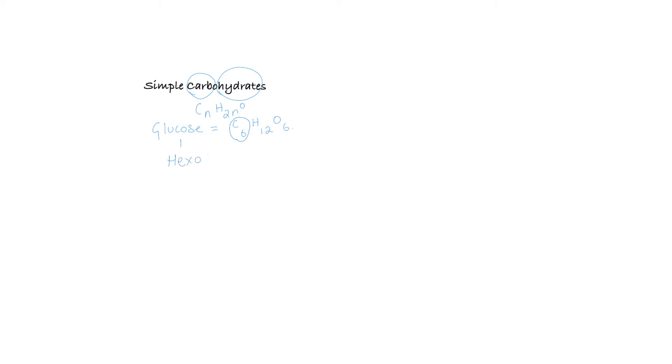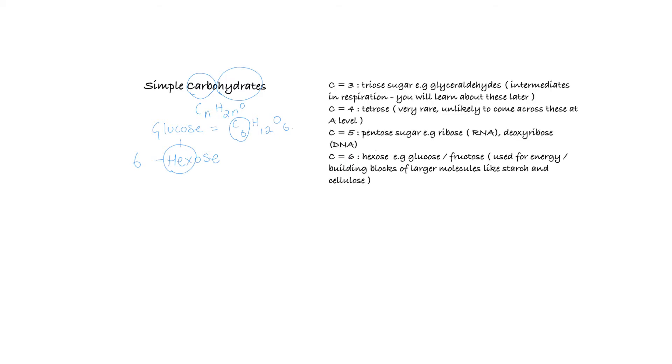We can apply that to any number of carbohydrates. If it had three carbons, it would be a triose sugar. If it had four carbons, it would be a tetrose sugar, which is very rare. If it had five carbons, it would be a pentose sugar, which you'll learn about.